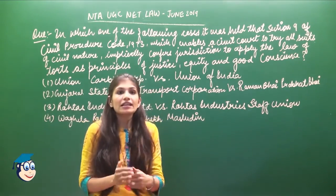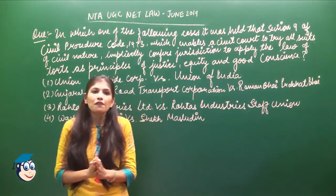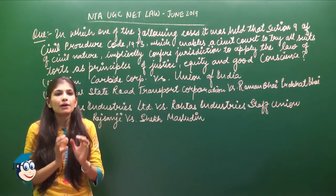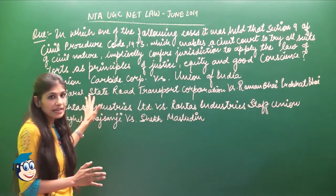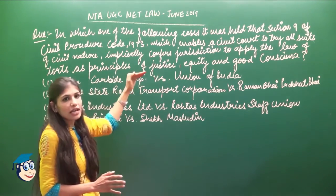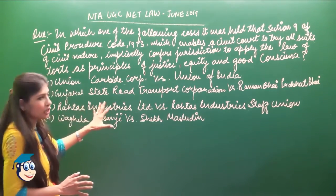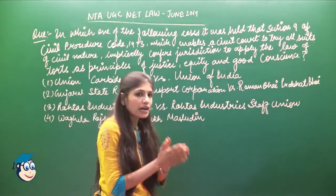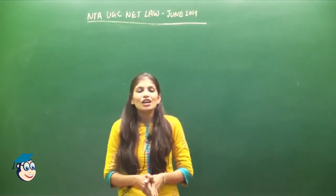The Union Carbide Corporation versus Union of India case relates to the 1984 Bhopal gas leak tragedy, where thousands of people were injured and many died — one of the biggest tragedies in Indian history. In this landmark case, it was established that Section 9 of CPC, which decides the jurisdiction of civil courts, also impliedly confers jurisdiction over cases related to justice, equity, or good conscience, meaning civil courts can take up such cases as well.